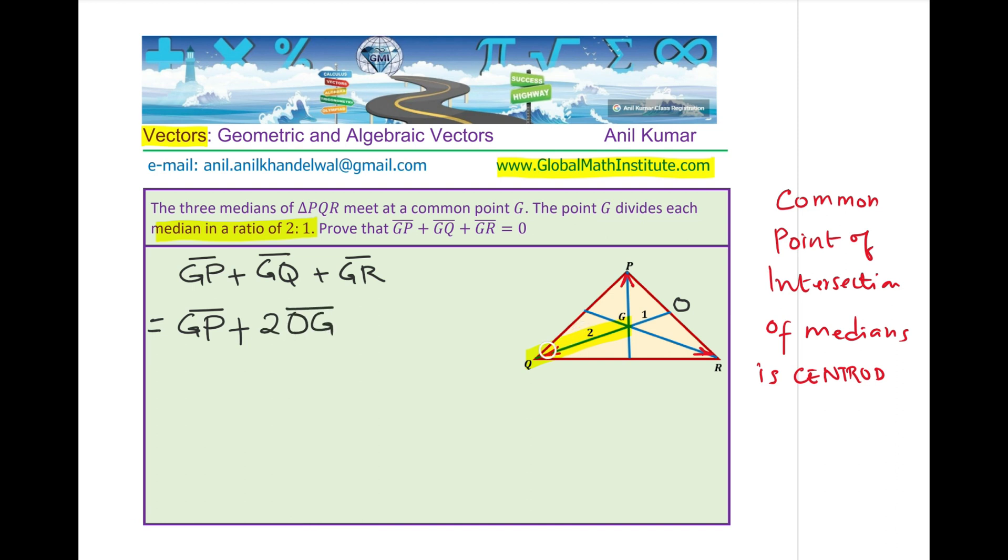When the vectors have the same direction, then the magnitude is a scalar product. Therefore, since the ratio is 2 is to 1, O to G is half of G to Q. So it can be written as 2 times OG. Now let's maintain the other vectors as such.